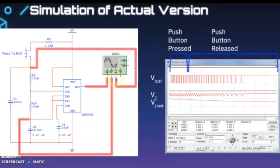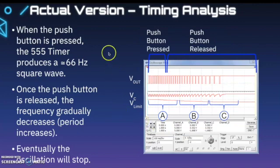In the simulation of the actual version, we have a third channel added to our oscilloscope. V out stays a square wave but it eventually gets longer. When the push button is pressed in this area, then once it's released the square wave starts spreading out. VC starts spreading out, and V limit based on C1 gradually starts to wane and decrease until it's completely flat. Once the button is released, the frequency gradually decreases and the period increases, eventually the oscillation stops and the rest of the circuit can determine the specific number.